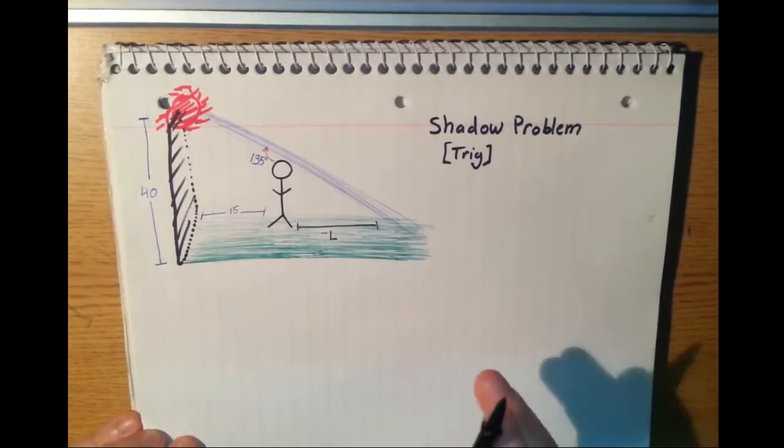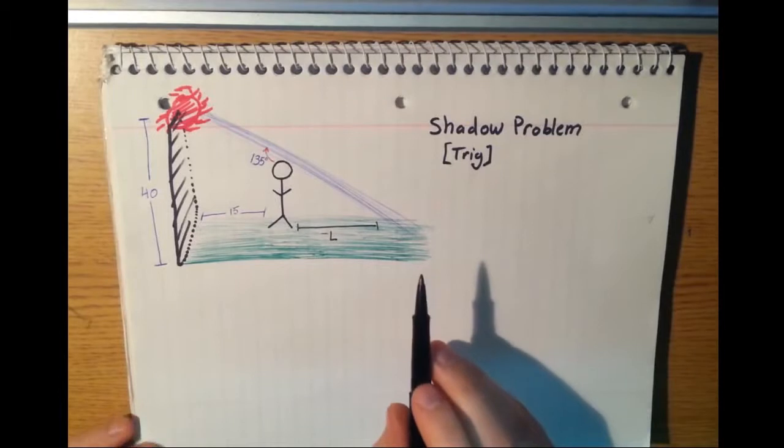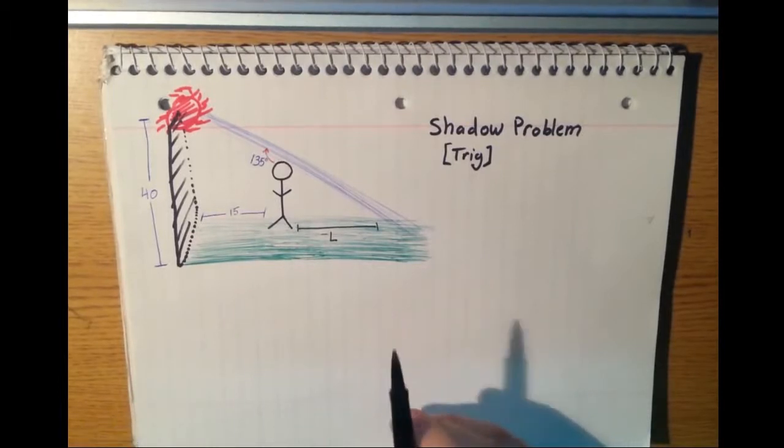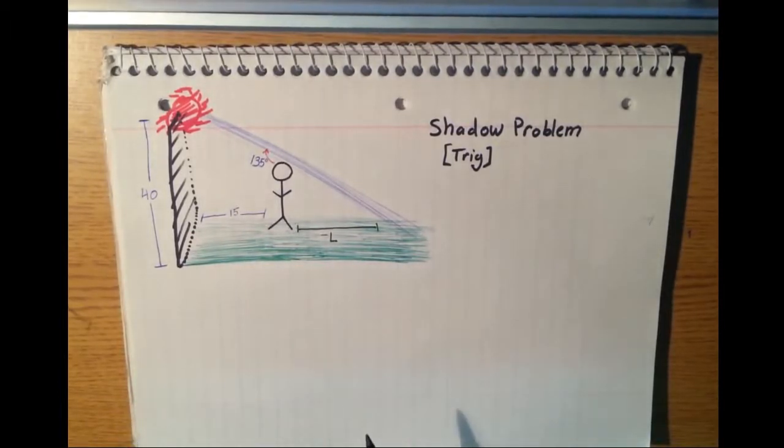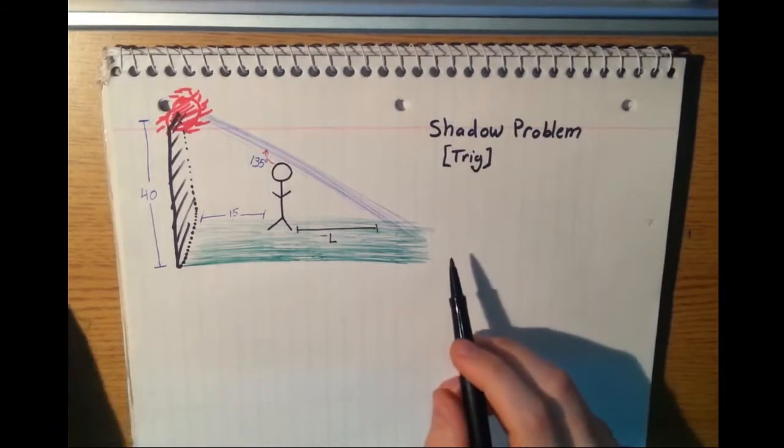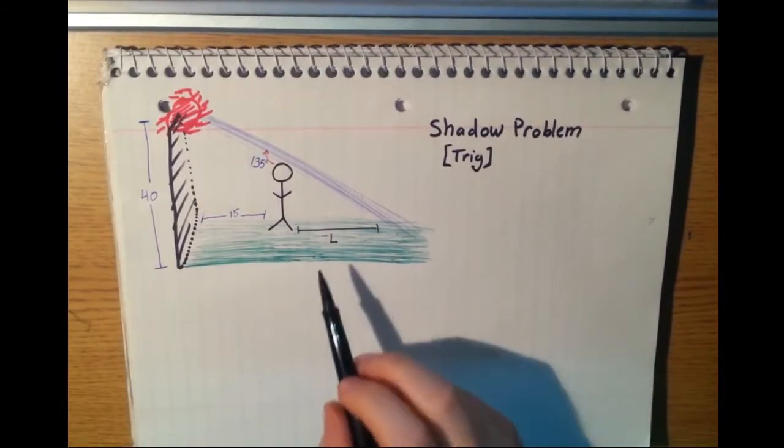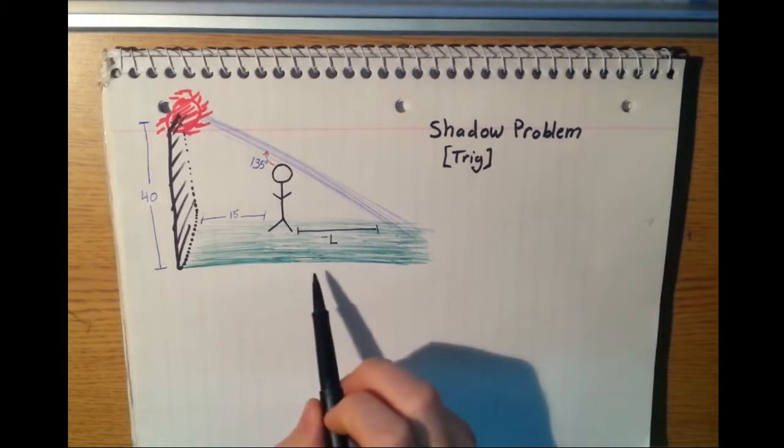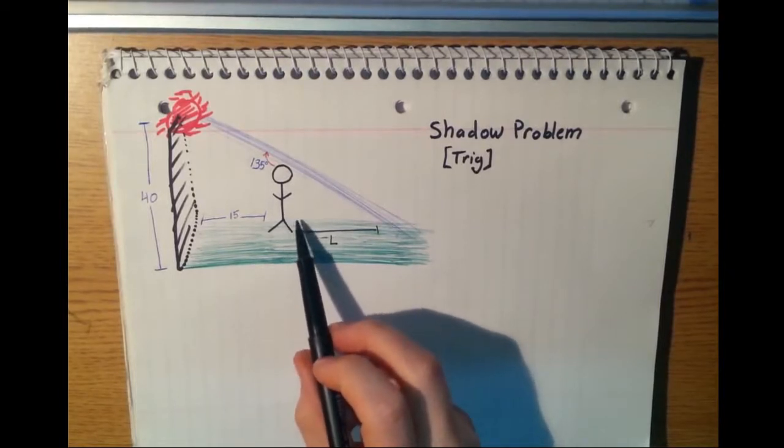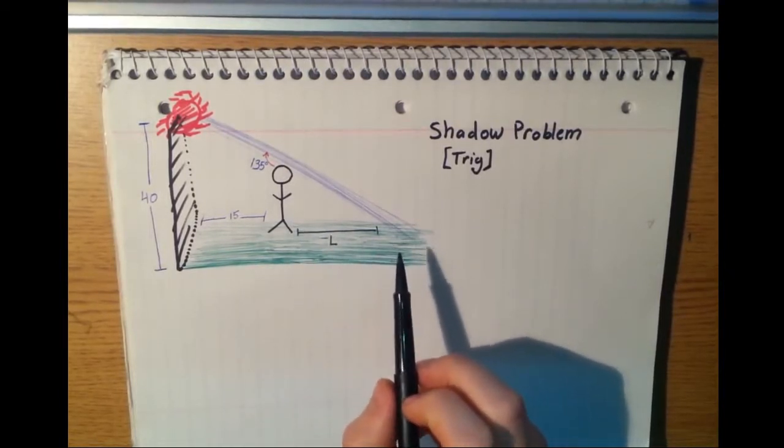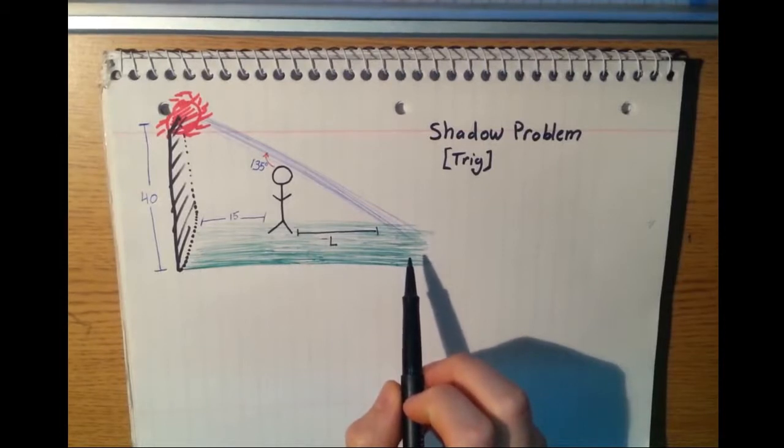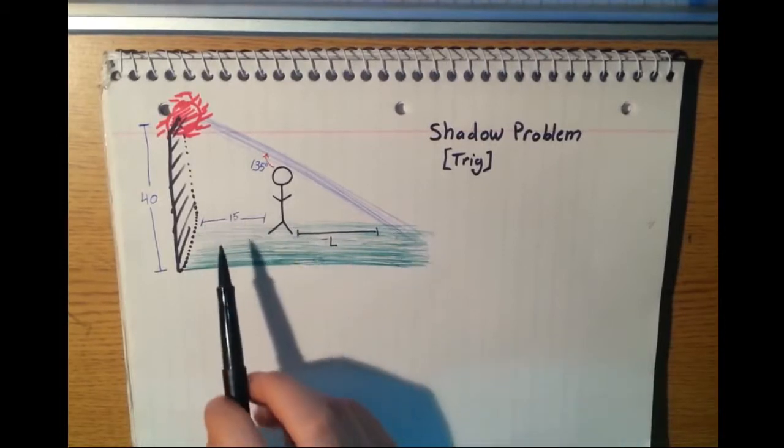So there's two things to recognize here. The first one is that we're dealing with similar triangles. Now you might have encountered similar triangles before. There are a number of criteria to determine if we have similar triangles. In this case, we have similar triangles because two angles shared are the same. Here's what I'm talking about.